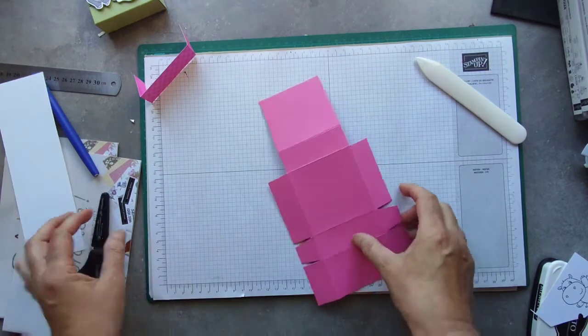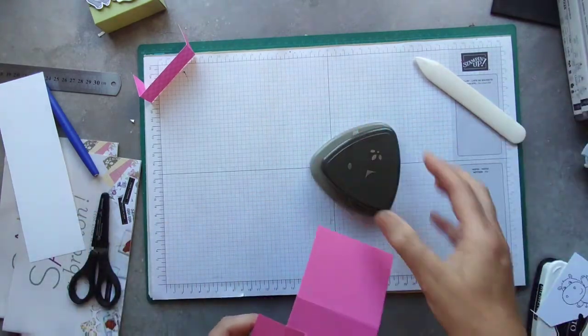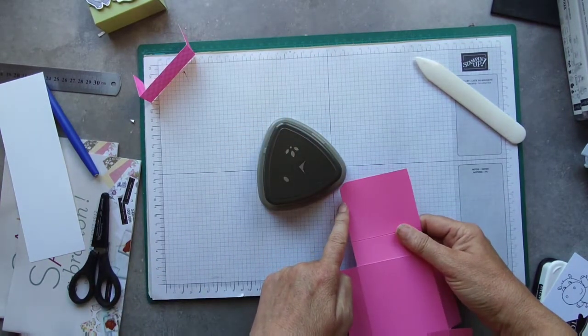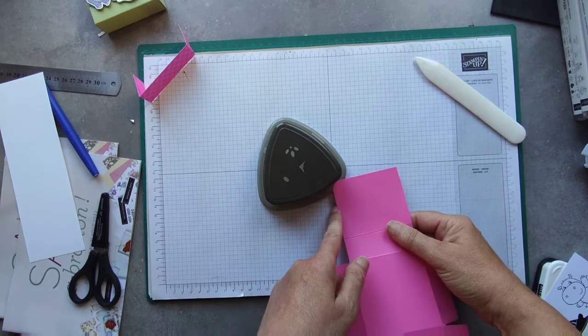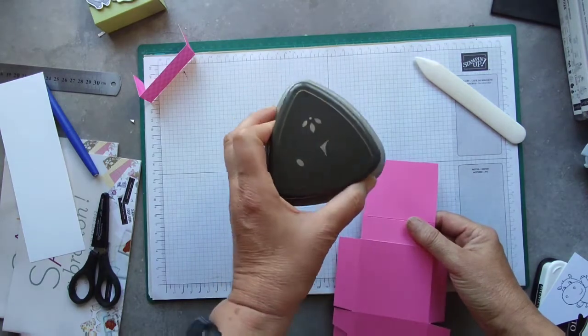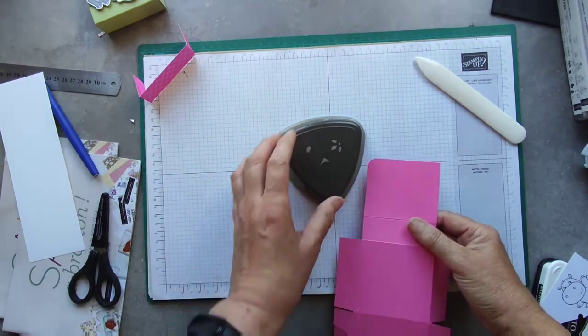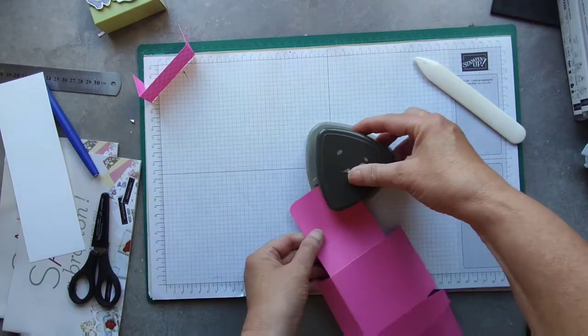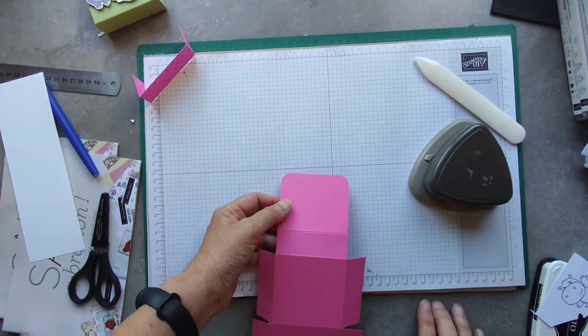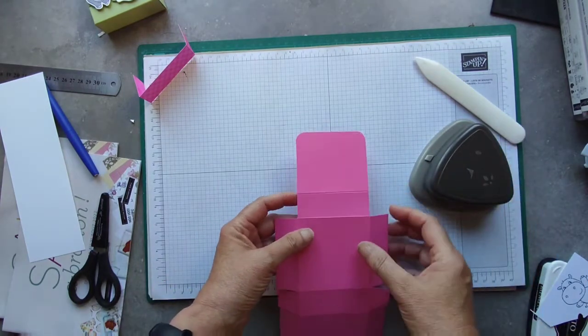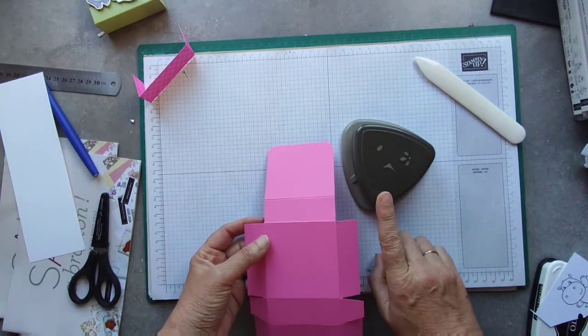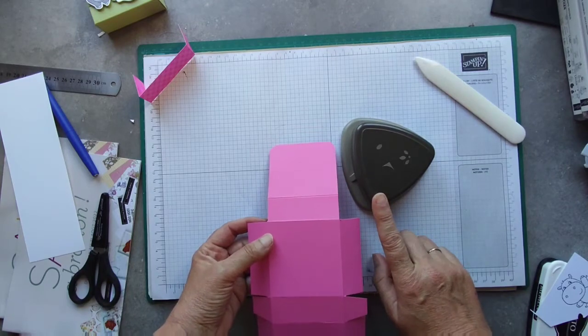The small one is the front. So what we're going to do is I'm going to cut down to the second score line, and I'm going to cut up the squares. Now I'm going to use my corner rounder to round the corners. You don't have to do this, I just think it looks nicer, and unfortunately this punch is no longer available, it's been retired.